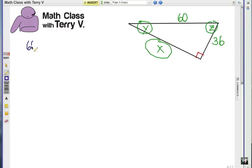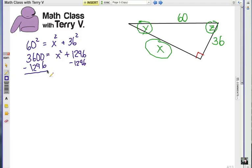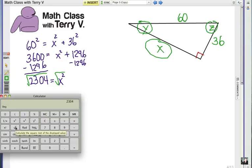Okay, now remember, it's the hypotenuse squared equals one leg squared plus the other leg squared. 3600 equals X squared plus 1296. We're going to subtract 1296 from each side, which gives us 2304. We're going to take the square root of each side,